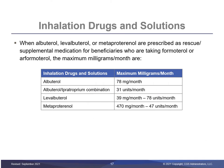Medicare does have allowance for some rescue dosing. Rescue dosing is an amount in addition to what the usual maximum would be for albuterol, albuterol-ipratropium combination, levalbuterol, and metaproterenol for beneficiaries who take either formoterol or arformoterol.